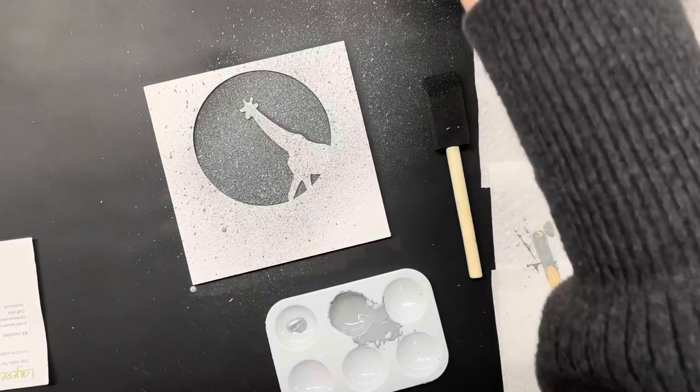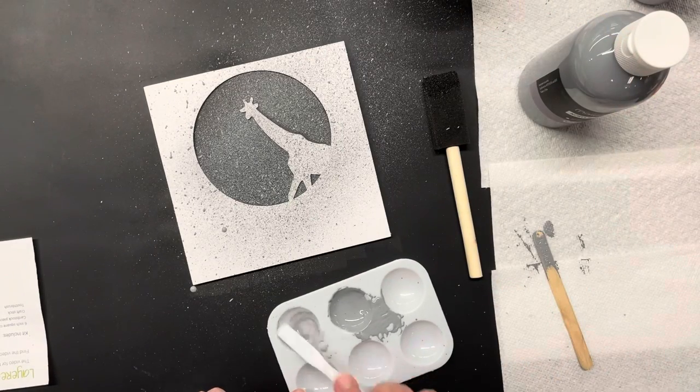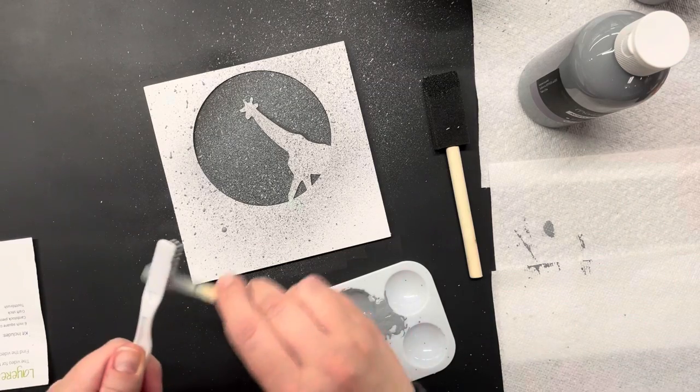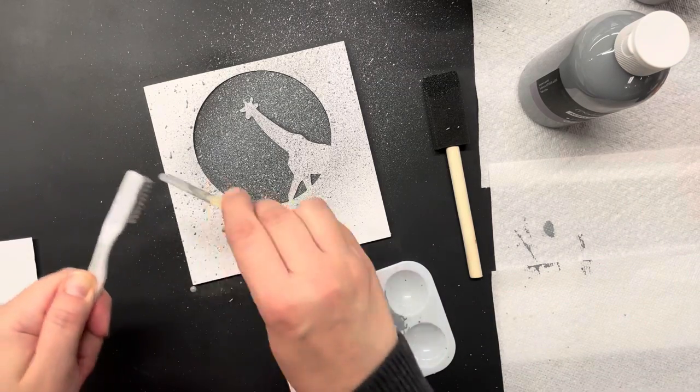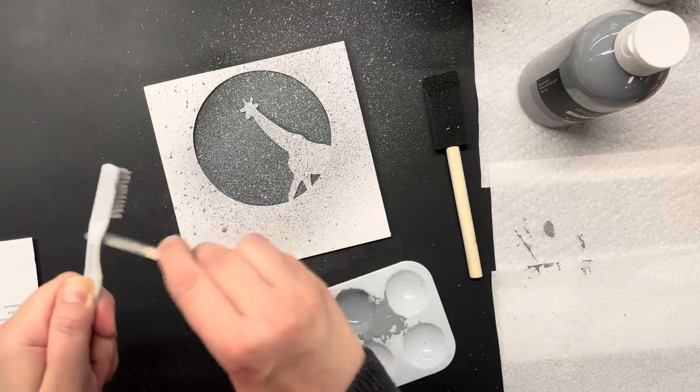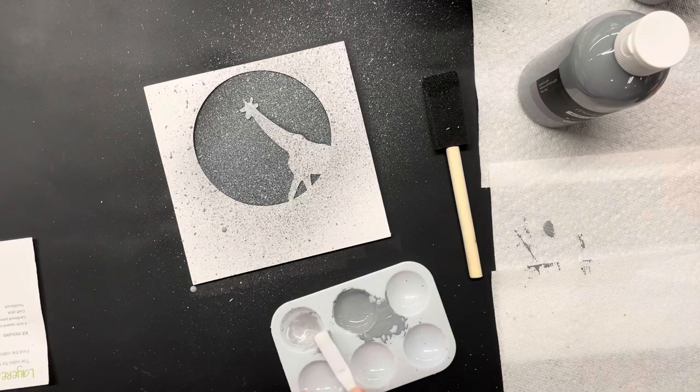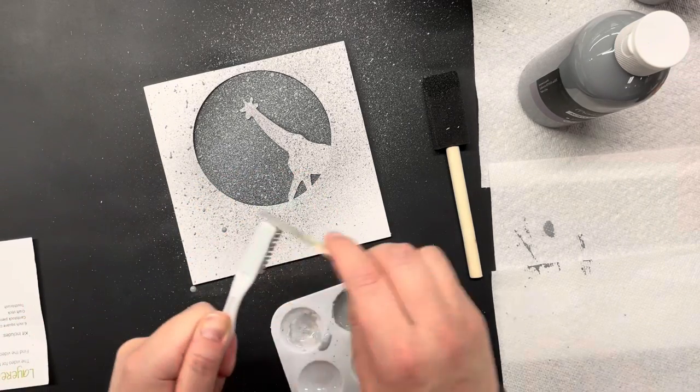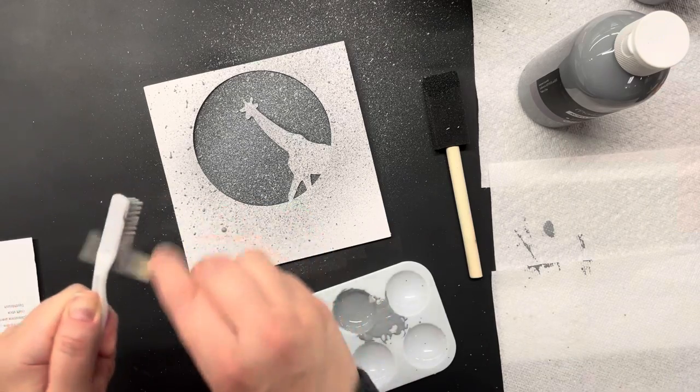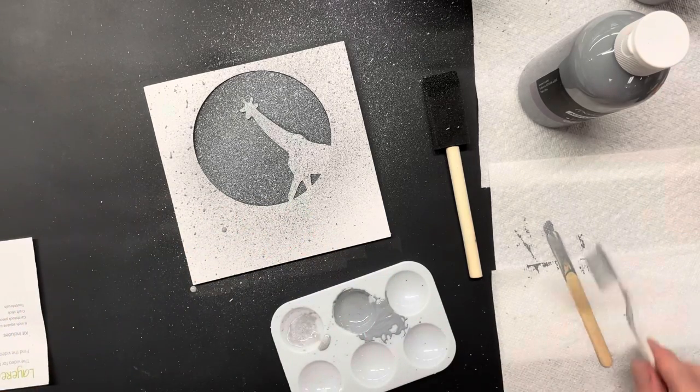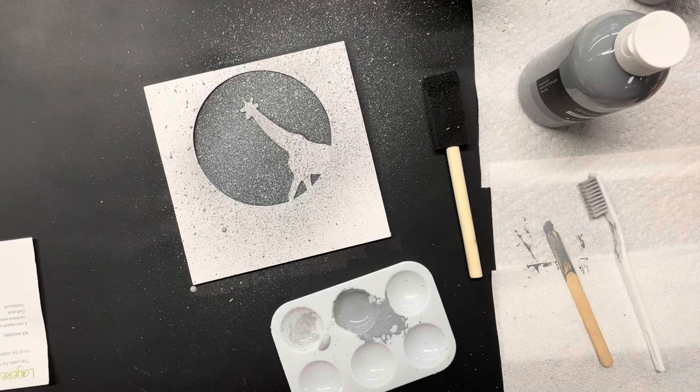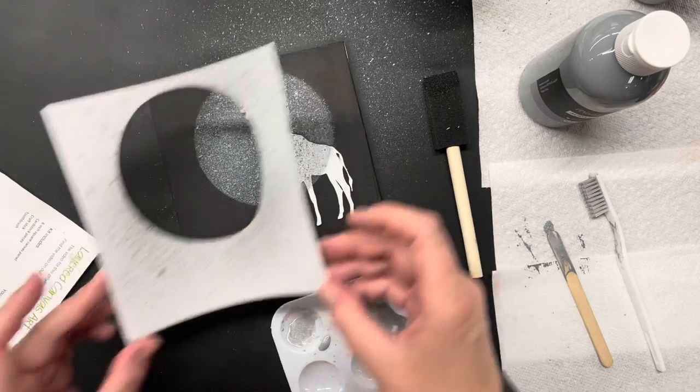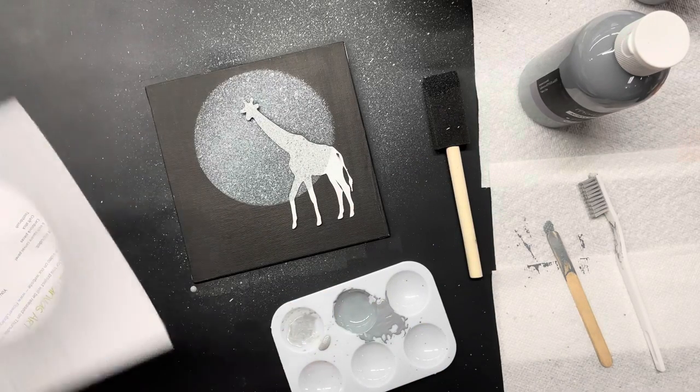I'm going to add in a little bit of silver. And once that has dried, I'm going to carefully remove the paper. I'm going to remove the top square, leaving my giraffe still in place.